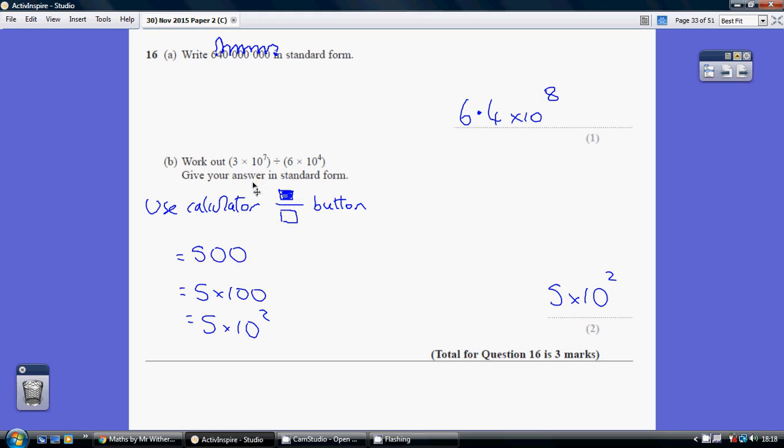So again, we need the first number between 1 and 10, so that's 5. So 500 is 5 times 100. 100 is 10 squared, so it's 5 times 10 to the 2.